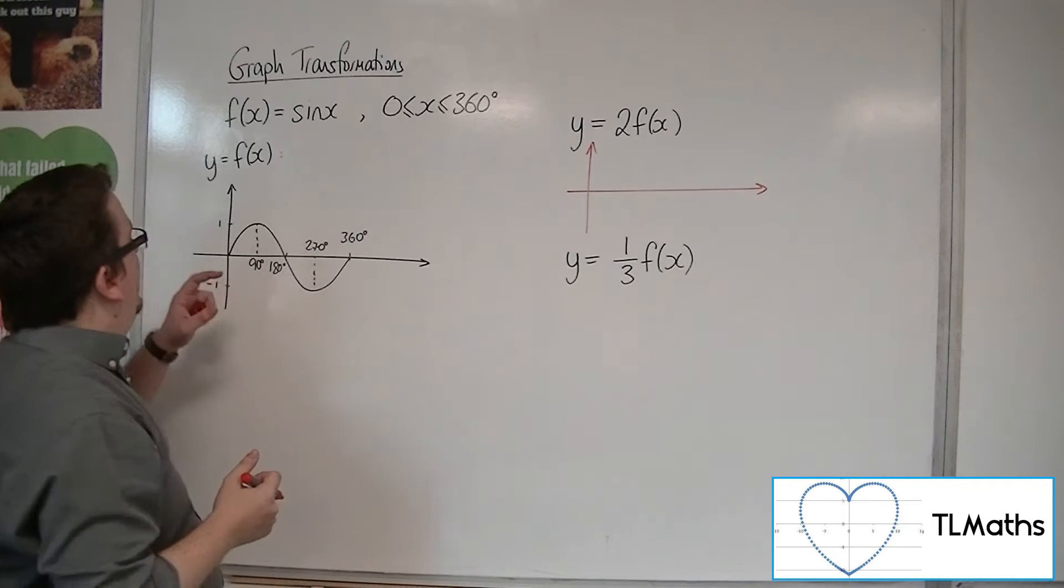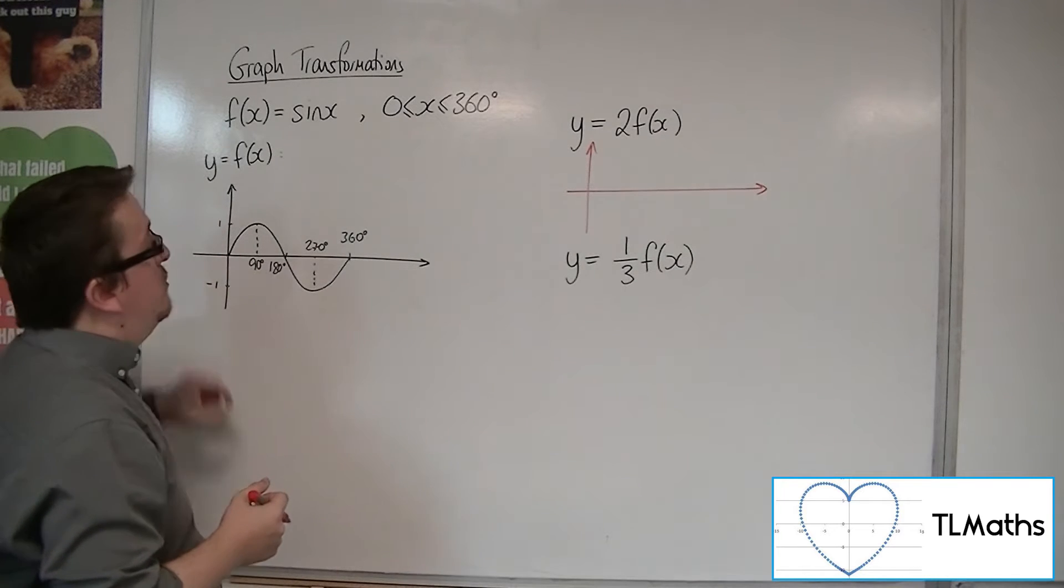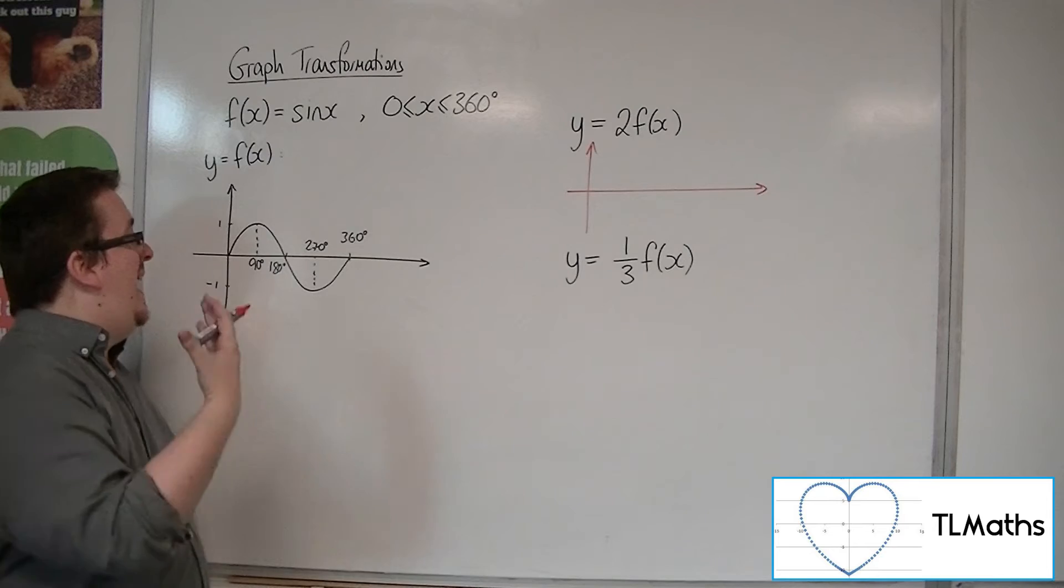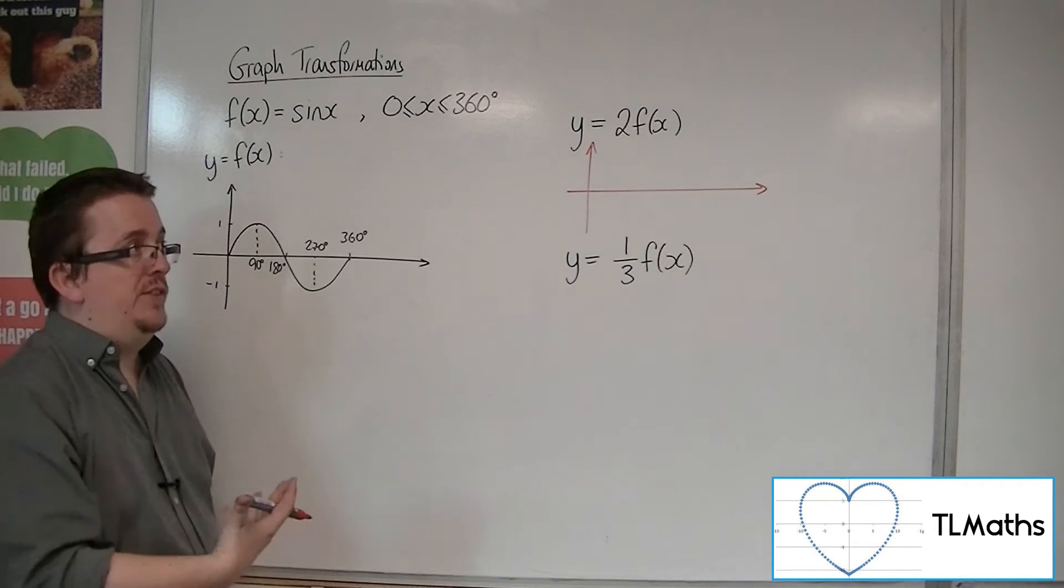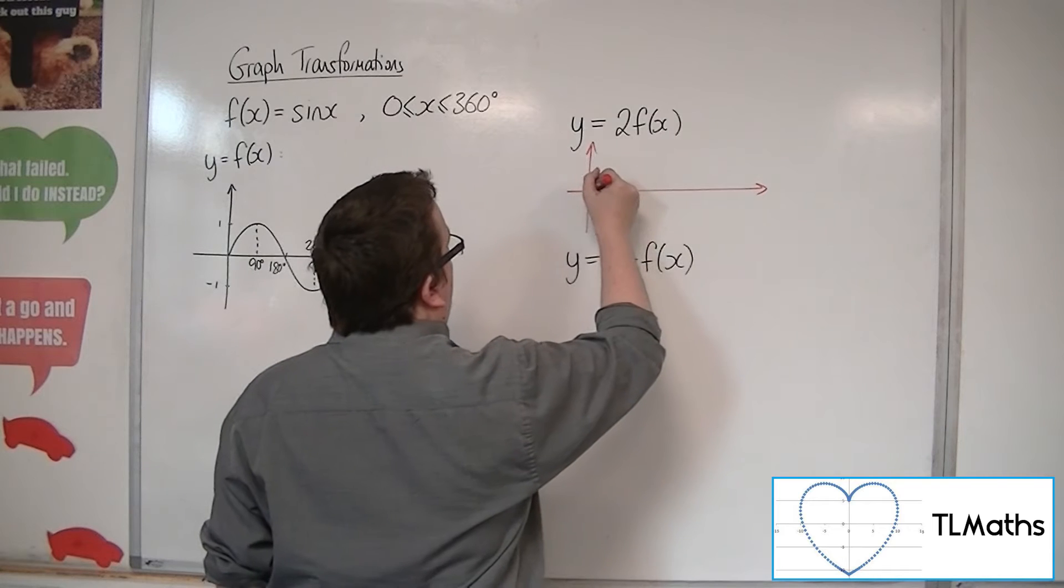So when we look at this point here, (0, 0), when x is 0, f(0) is 0, then 2 lots of 0 is just 0. So it is still going through the origin.